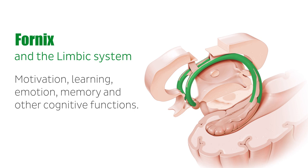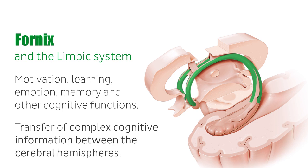The limbic system is comprised of numerous brain structures including the hippocampus, hypothalamus, septal nuclei, the amygdala, the cingulate cortex, the entorhinal cortex, the parahinal cortex, the parahippocampal cortex, the reticular formation of the midbrain, and the olfactory areas. The fornix is an integral part of the limbic system and is important for the transfer of complex cognitive information between the cerebral hemispheres.